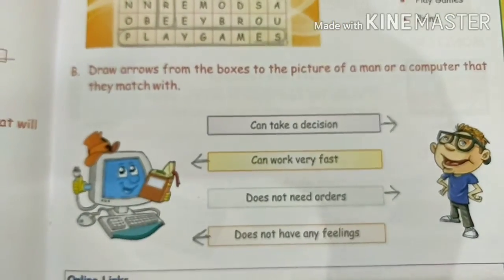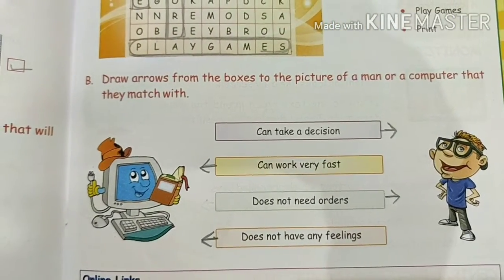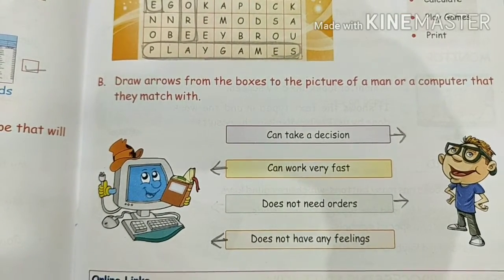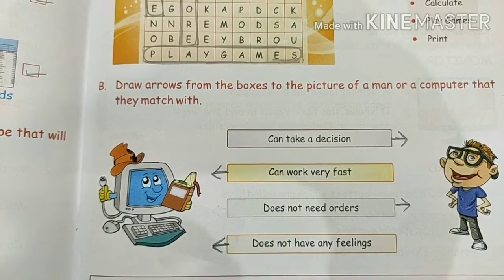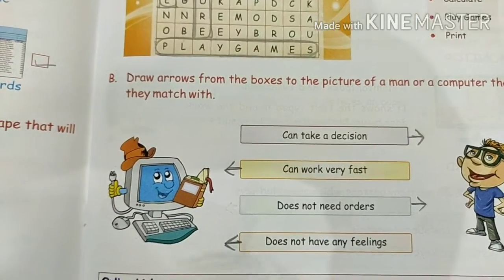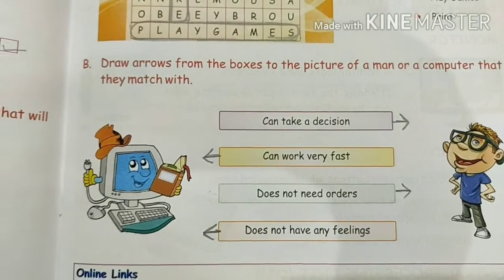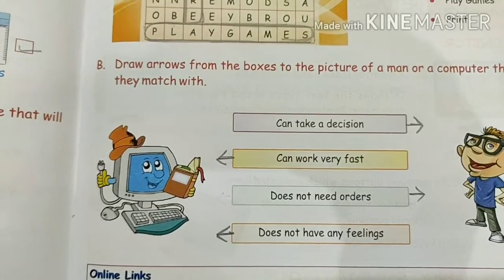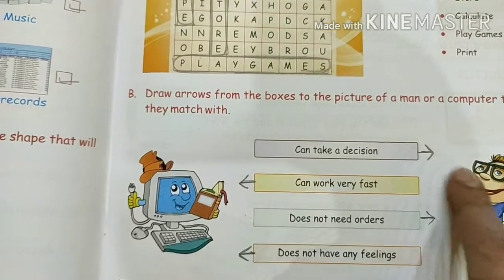Then we come to the next exercise — I think this is the last exercise of the book. Draw arrows from the boxes to the picture of a man or a computer that they match with. You have to match the activity done by a human and by a computer, and make an arrow accordingly. Can take a decision — who can take a decision? Man. Computer cannot take a decision because it's a machine. So I have made an arrow to the man side.